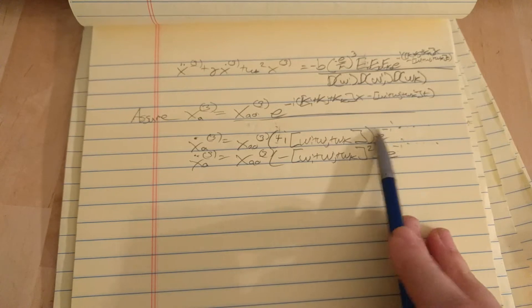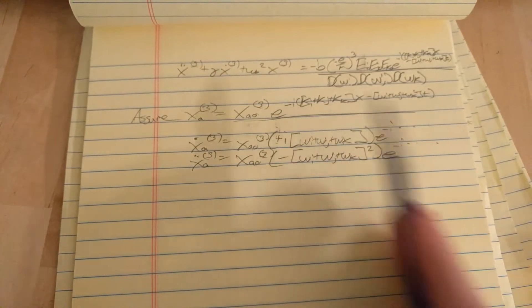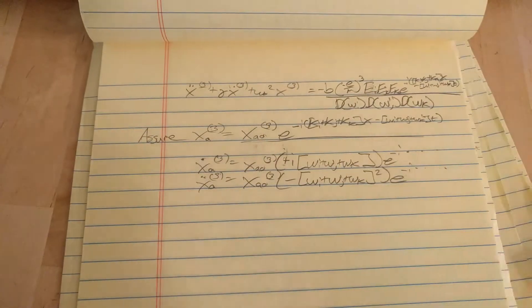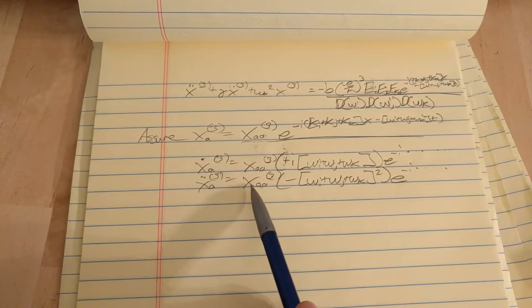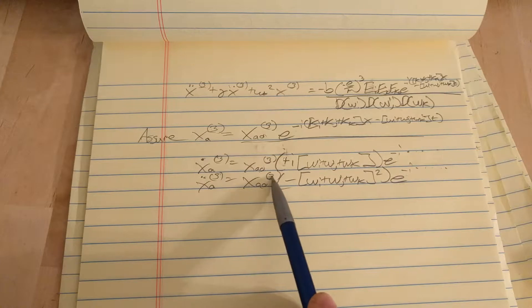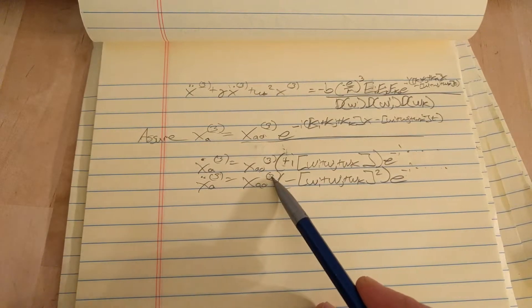Okay, so that's the first and second derivative. I just didn't write out the whole exponential, because it's the same thing as up here. And now we plug these into this equation, and we pull out the xa0 to the 3,